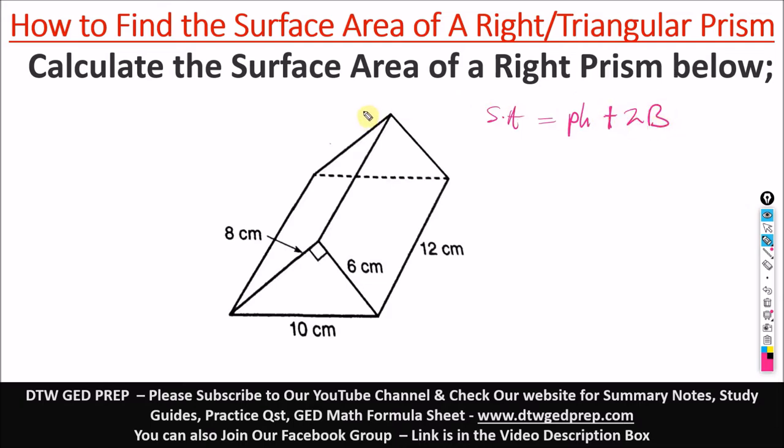Then plus 2 big B. Big B meaning the area of the base. In your formula sheets, there's a difference between the small b and the big B. The small b is just the base, like a base of the triangle, while the big B is the area of the base. P here is the perimeter of the base.